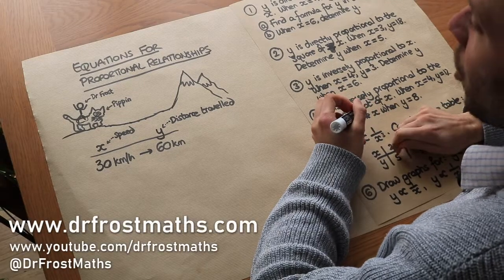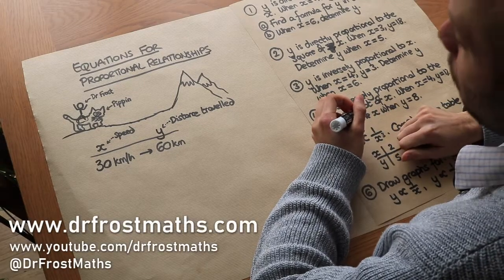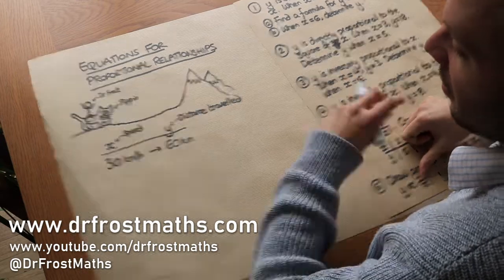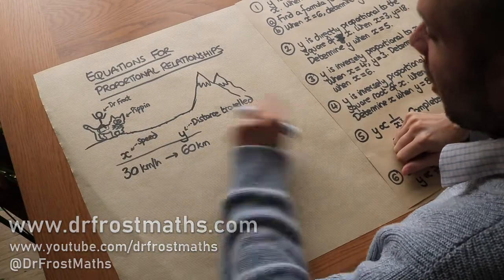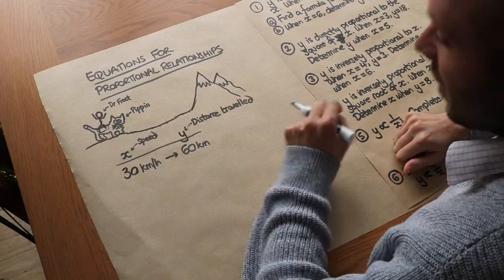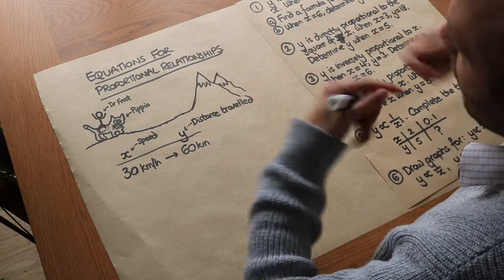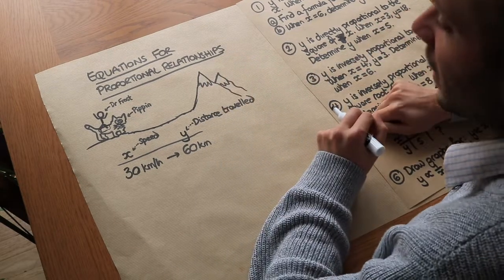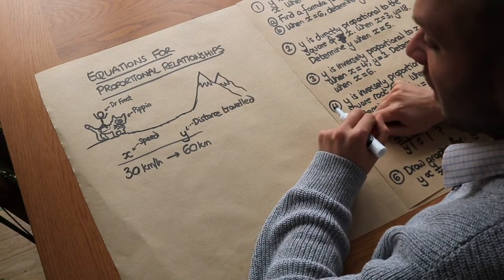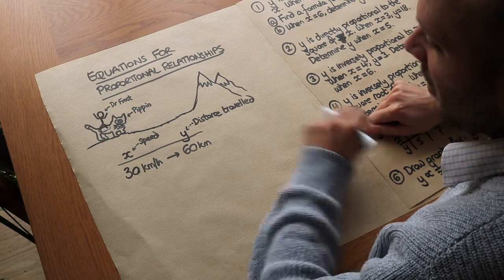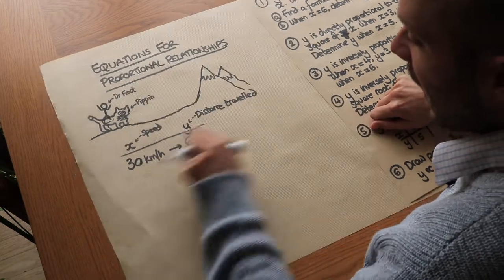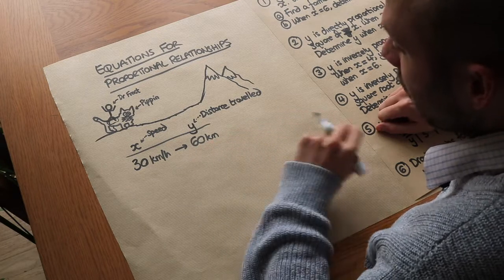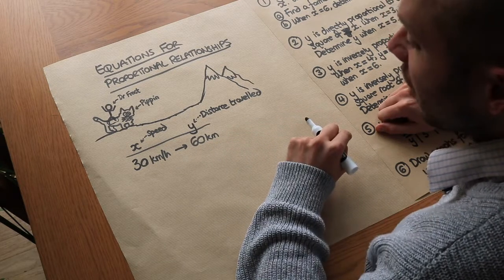Hello and welcome to this video on equations for proportional relationships. Let's suppose that I'm riding Pippin the Cat and I want to make it to these mountains — I've got a fixed amount of time in which I want to travel as far as I can. My speed on Pippin the Cat was 30 kilometers per hour and that got me 60 kilometers.